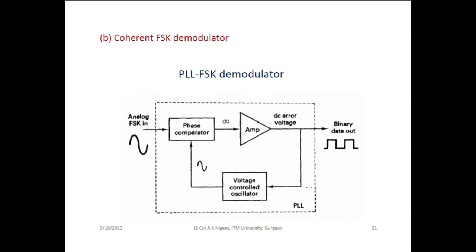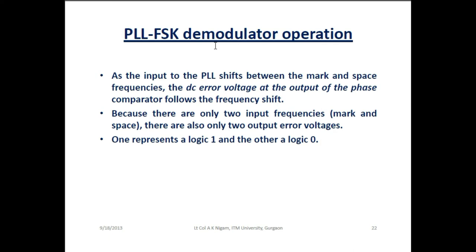The output of the amplifier is simultaneously given to the voltage-controlled oscillator. If digital data 0 is obtained, it decreases the amplitude level; if it is logic 1 or the mark signal, it increases the amplitude level. According to that, the phase comparator generates the DC output. In PLL FSK demodulator operation, the input to the PLL shifts between the mark and space frequencies. The DC error voltage at the output of the phase comparator follows the frequency shift — either maximum or minimum frequency. Since there are only two input frequencies (mark and space), there are also only two output error voltages: one representing logic 1 and the other logic 0.